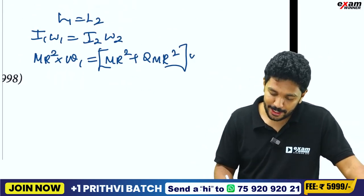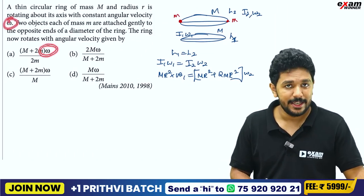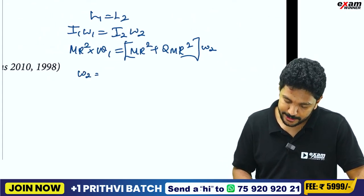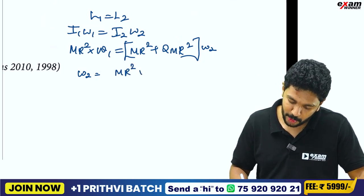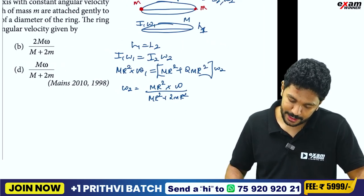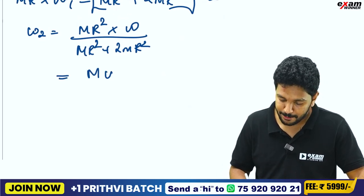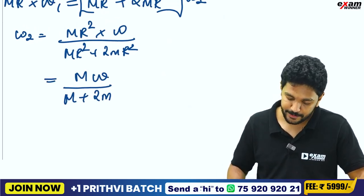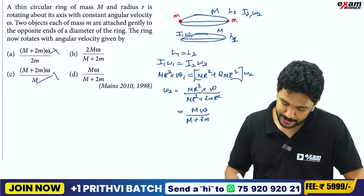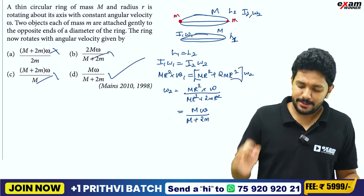Okay. So applying conservation of angular momentum: I₁ω₁ equals I₂ω₂. We get ω₂ equals M·R²·ω₁ divided by (M·R² + 2M·R²). All terms have R², so ω₂ equals M·ω divided by (M + 2M), which simplifies to M·ω divided by 3M. Direct application.